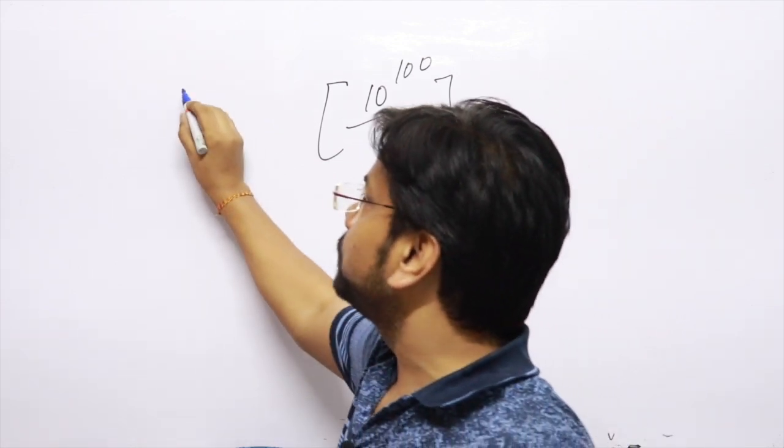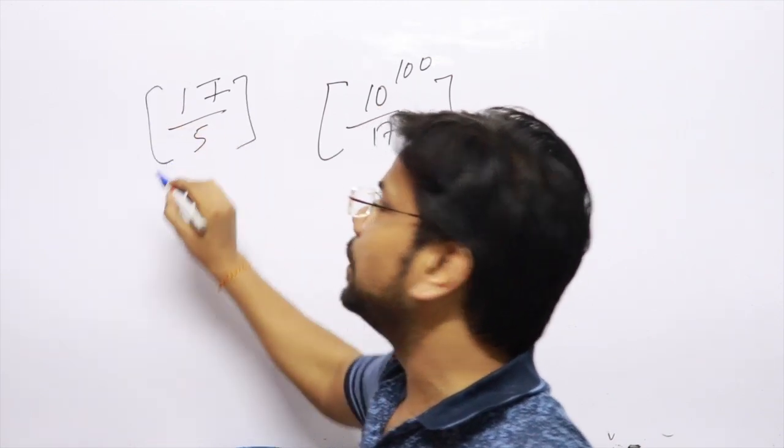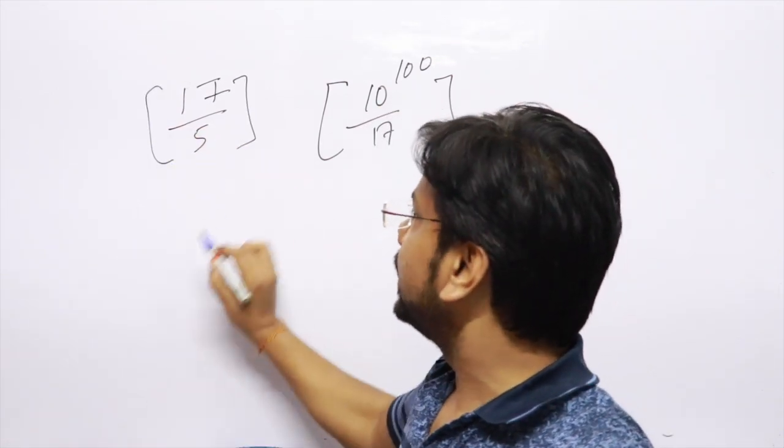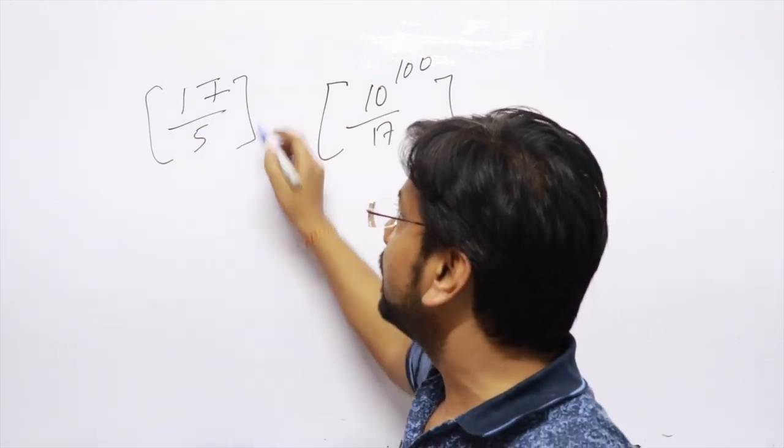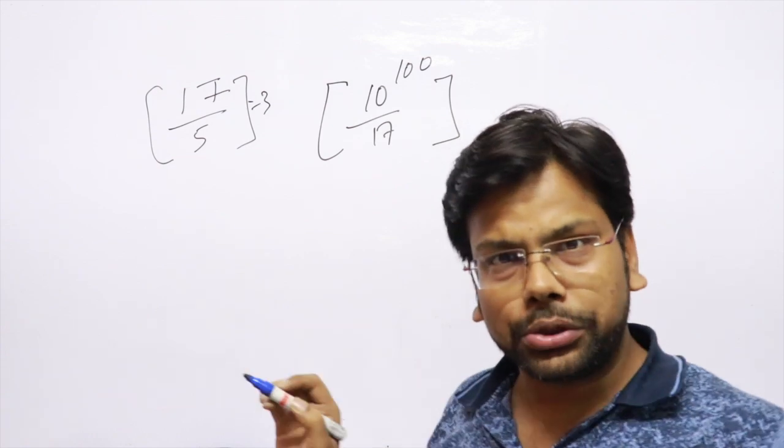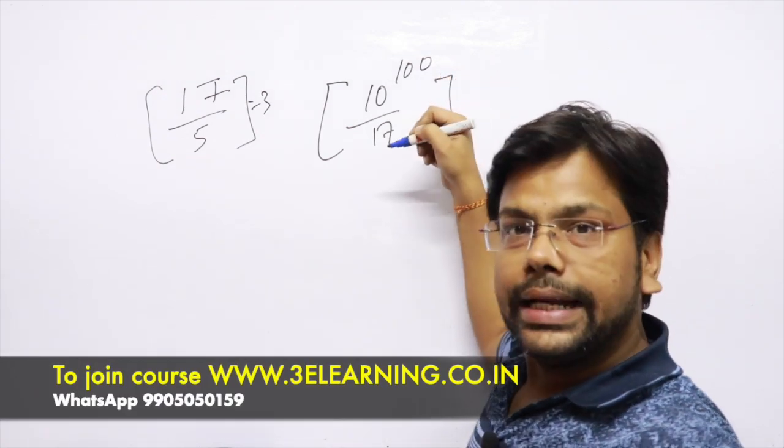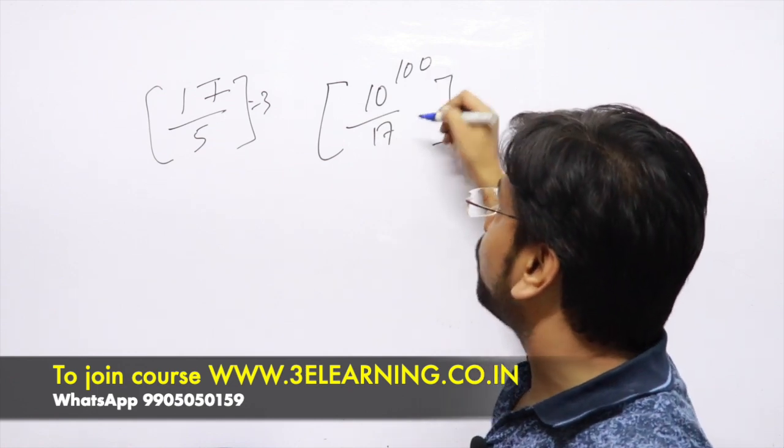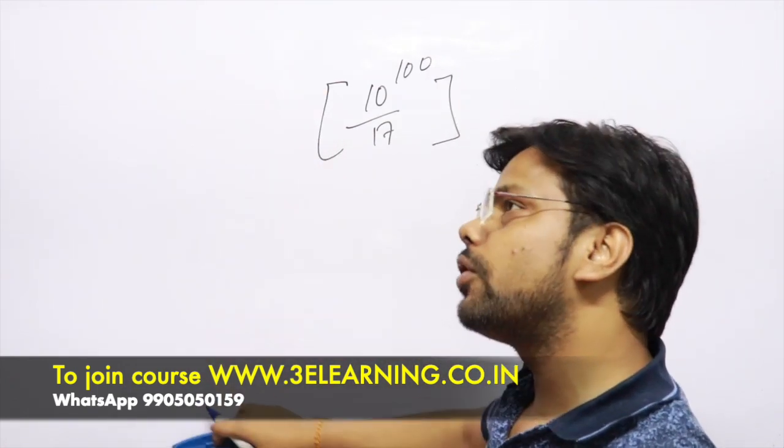If I ask you, 17 divided by 5, what would be the integral value? And how many times it is divisible? What would be the coefficient?